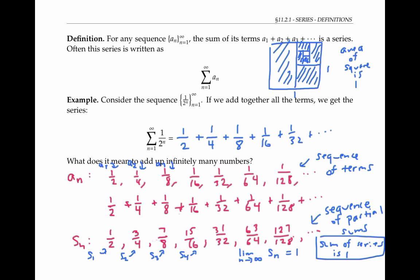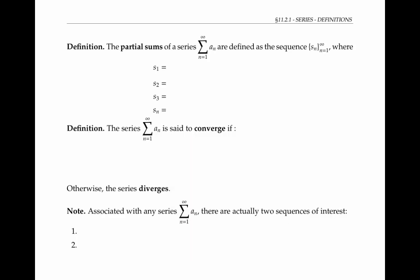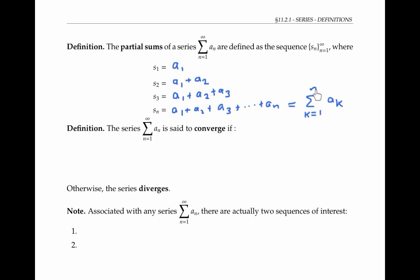In this example, we found the sum of the series by evaluating the limit of the partial sums. In general, this is how we find the sum of any series. The partial sums of the series are defined as the sequence S of n, where S of one equals the first term a sub one, S of two equals a sub one plus a sub two, and S of n is the sum of the first n terms. I can also write this in sigma notation as the sum from k equals one to n of a sub k, using k as the index since n already represents the number of terms.